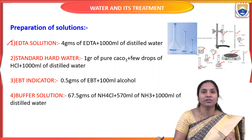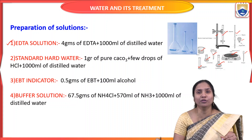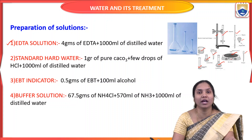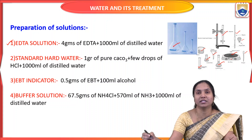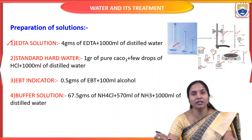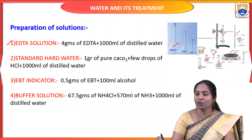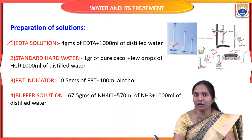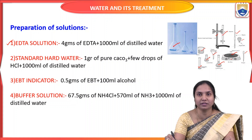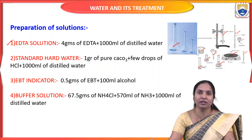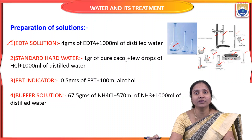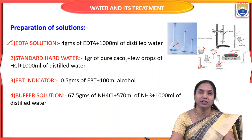Preparation of EDTA solution: weigh out 4 grams of EDTA powder using the weighing machine, then dissolve it in 1000 ml of distilled water and transfer to a 1000 ml standard volumetric flask. This is the preparation of the EDTA solution.